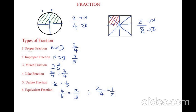So here we have learnt 6 types of fractions. Proper fraction — where the numerator is lesser than the denominator. Improper fraction — where the numerator is greater than the denominator. Mixed fraction. Like fractions — where the denominators are the same. Unlike fractions — where the denominators are different. And equivalent fractions — where two fractions are equal when they are in their lowest form.